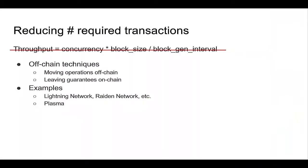There is another set of work that doesn't try to improve factors in the throughput equation. Instead, they try to directly reduce the number of required transactions on-chain — that's how they achieve scalability. Basically, people propose off-chain techniques that move the actual operations off-chain, but still leave some guarantees on-chain, so that the Bitcoin or Ethereum mainnet just needs to enforce those guarantees without having to perform all the operations.